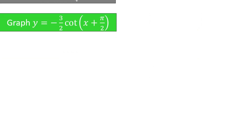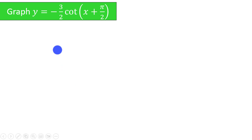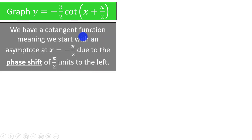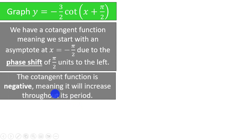Let's try one final problem. We are asked to graph y is equal to negative 3 halves times the cotangent of x plus pi over 2. We have a cotangent function, meaning that we start with an asymptote at x equals negative pi over 2, due to the phase shift of pi over 2 units to the left, indicated by the plus pi over 2. This is a negative cotangent function, which means it will increase throughout its period — since a positive cotangent function decreases, the negative sign means we do the opposite.